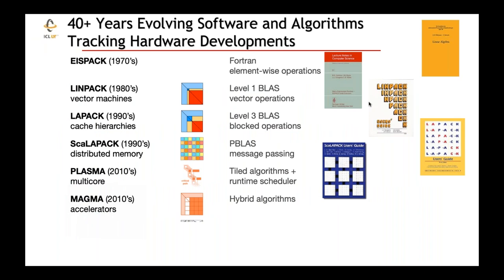We've been involved in the design and development of software along these lines for the past 40 years. There was a package called EISPACK in the 70s — a Fortran package translating algorithms from the handbook by Wilkinson, Reinsch, and colleagues. Following that was LINPACK, intended to solve dense problems on cache-based and shared-memory parallel machines. The LAPACK routines used Level 3 BLAS for blocked operations. In the 90s, we developed those ideas into a distributed memory version called ScaLAPACK, using MPI within the PBLAS communication layer.